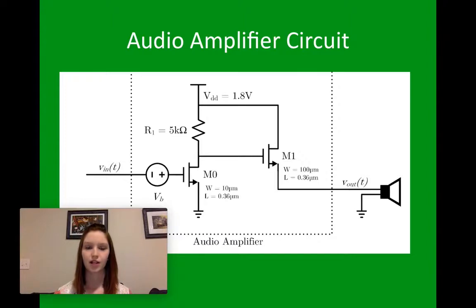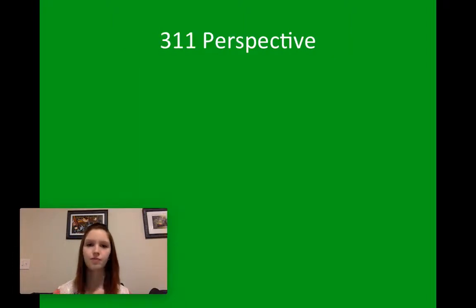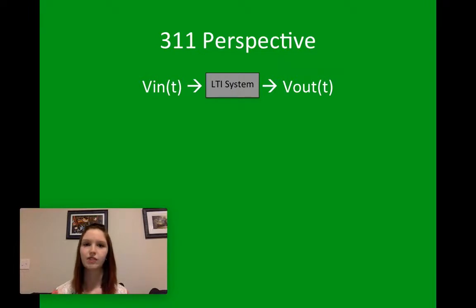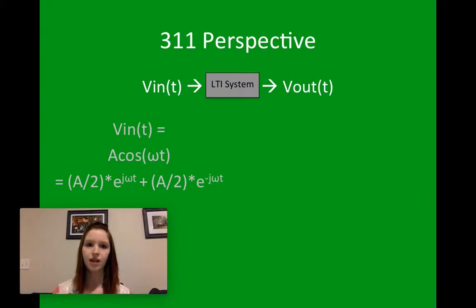Inside of the dotted box here, we're going to talk about this in terms of 311 and 331, and then over here on the right, we're going to talk about the actual speaker in terms of 341. From a 311 perspective, we have Vin(t) going to a linear time invariant system, and then we get Vout(t). Our Vin(t) here is A times cosine of omega t. Using Euler's function, we are able to break up cosine of omega t into the exponential of j omega t plus the exponential of negative j omega t over 2.